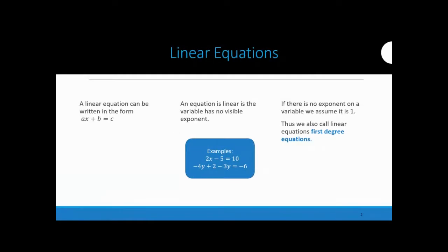Let's start with the definition of a linear equation. A linear equation is written in the form AX plus B equals C, or it can be written in that form. Sometimes it's not given in that form, but you can put it in that form.